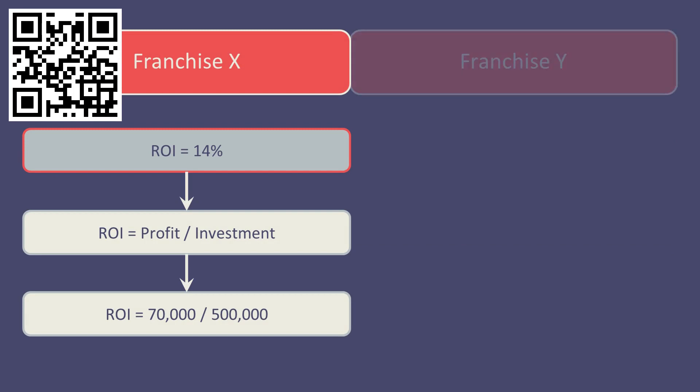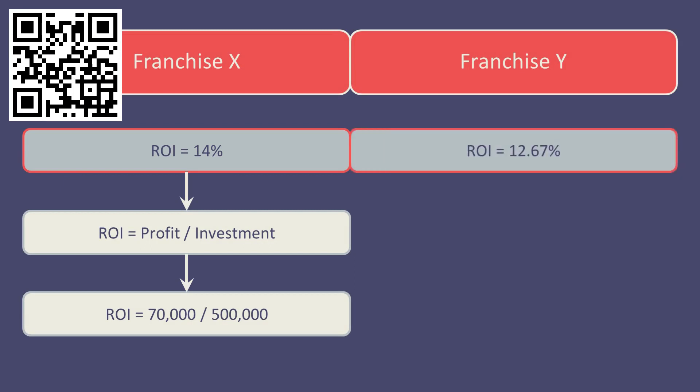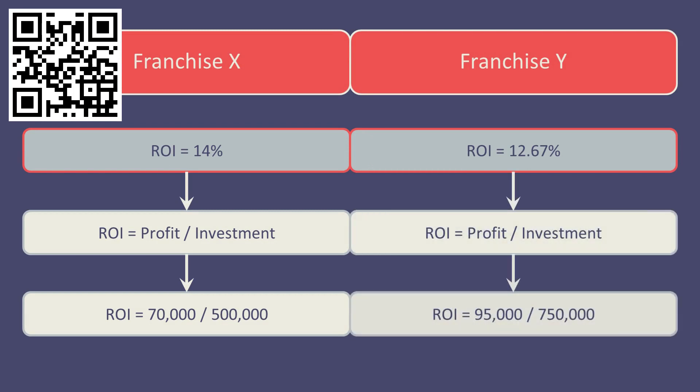Similarly, for franchise Y, a return on investment of 12.67% would be generated, being profit of £95,000 divided by the necessary investment of £750,000. We also need to be able to comment upon and make sense of these results.